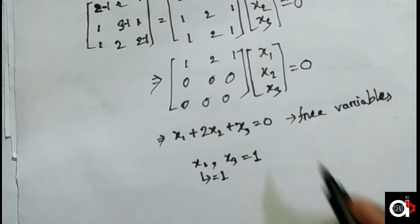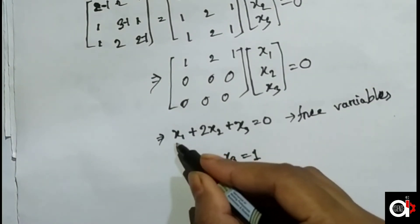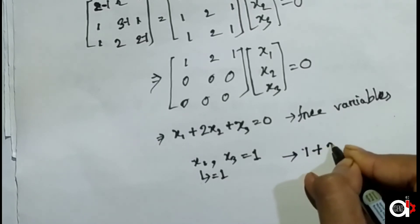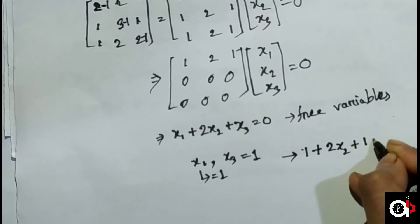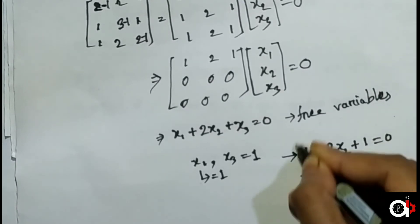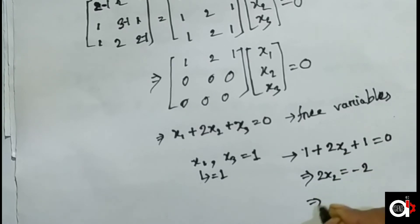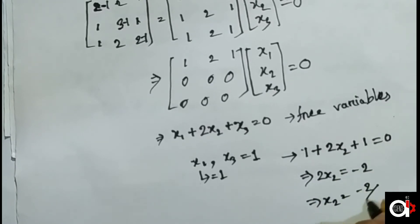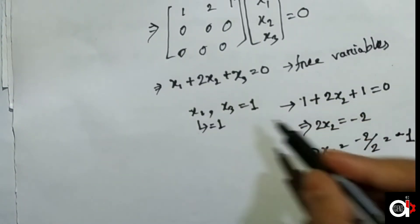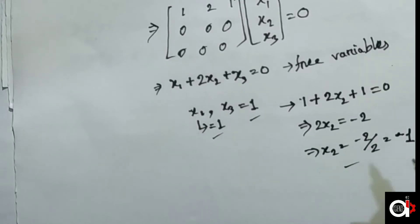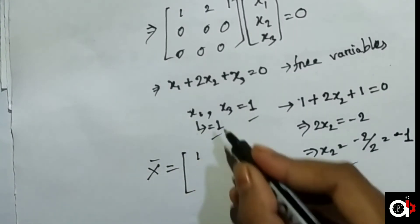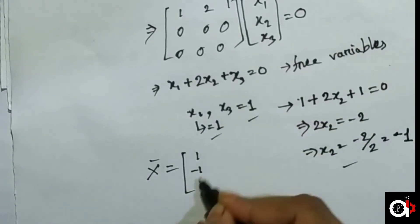From the equations, we have x1 plus 2x2 plus x3 equals zero. Setting x2 equals 1, we get 2x2 equals -2x1, so x equals minus 2 divided by 2 equals minus 1. Therefore x1 equals 1, x2 equals minus 1, x3 equals 1. This vector [1, -1, 1] is the eigenvector corresponding to lambda equals 1.